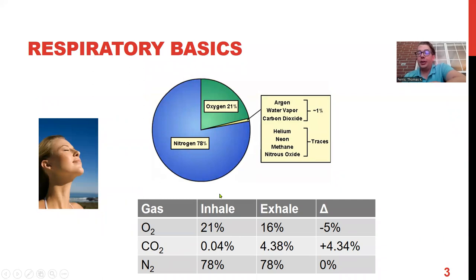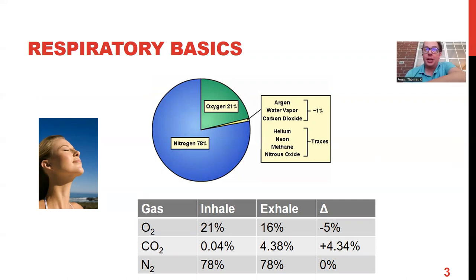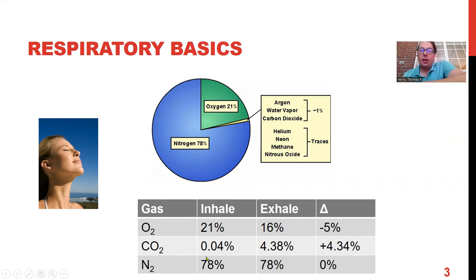So first talking about our respiratory system. This is probably not news to you, but we breathe air on Earth. What's interesting about that air is the oxygen content. Nitrogen, being most of the atmosphere, is an inert gas, and if you look at the inhalation/exhalation patterns, there's no absorption of nitrogen at all. We absorb about 5% of oxygen, and we exhale about 4.3% carbon dioxide.